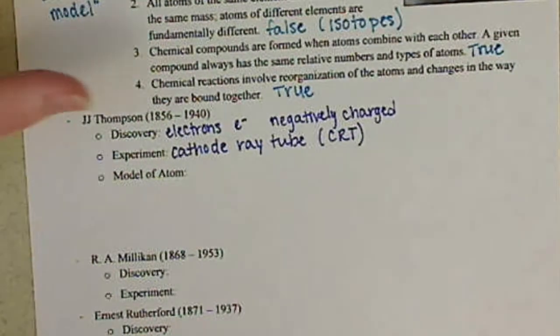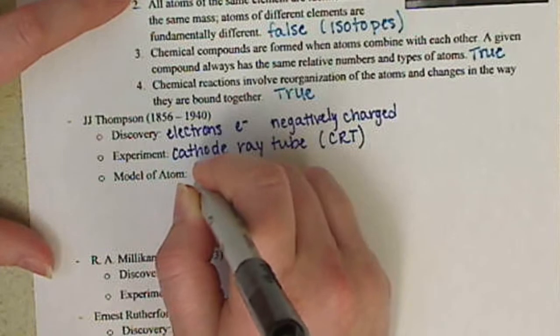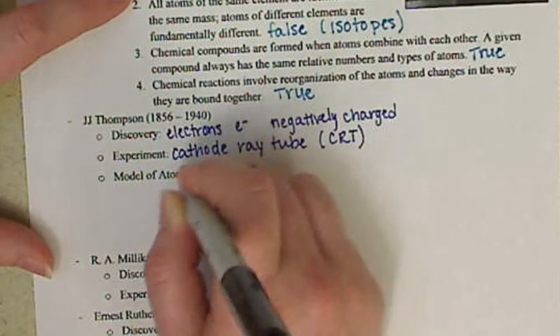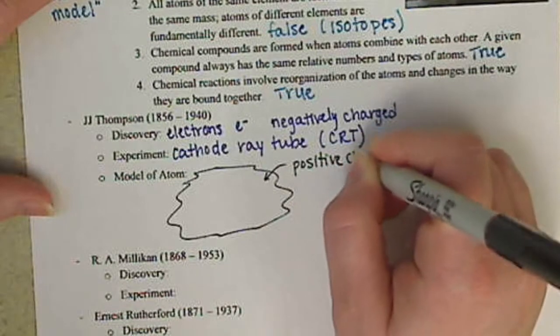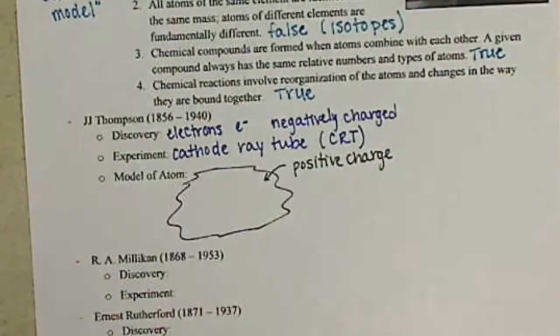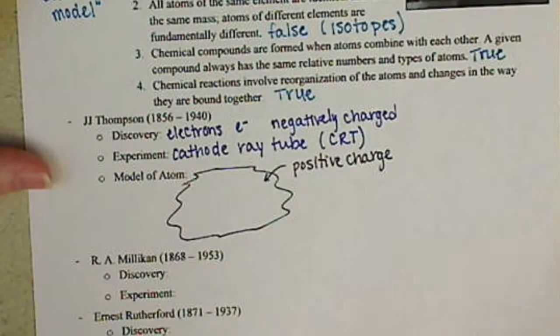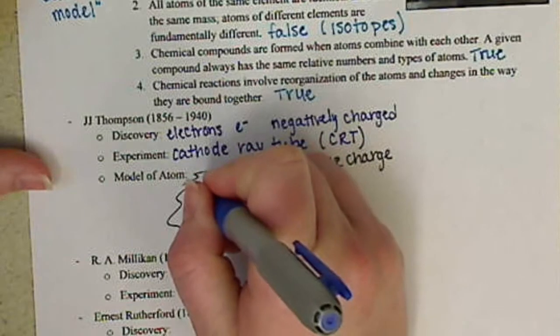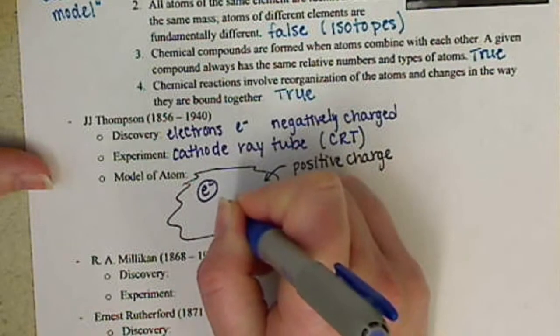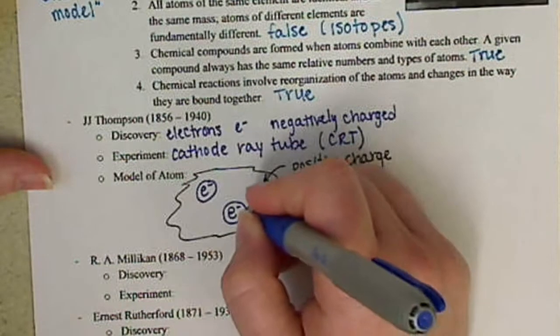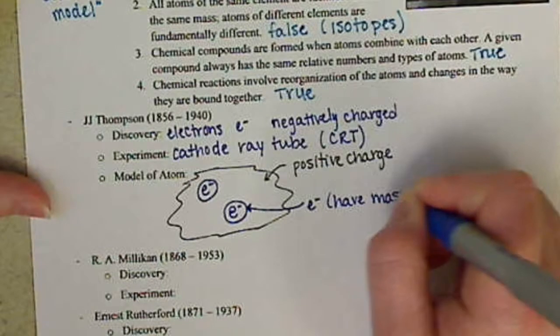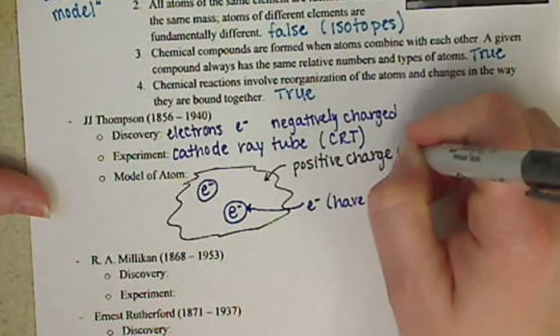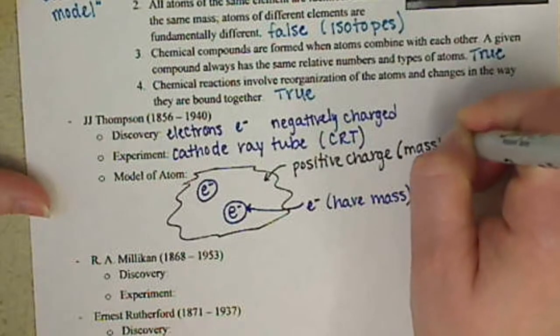His model of the atom, kind of interesting to look at. Basically he said there's this kind of space, this smear of positive charge. And he knew that there had to be positive charge because if we have something that's negatively charged, we need something to balance it out. And he said, you know, in this smear of positive charge, there we have our electrons. And he said, basically these are masses in here. This is our electrons. They have mass. He also said in this positive charge, this positive charge was massless, had no mass to it.